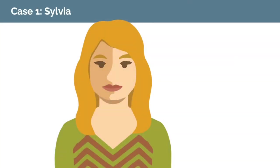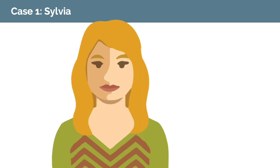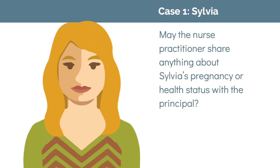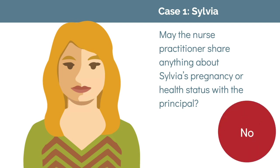Sylvia is 16. She gets a pregnancy test at her school-based health clinic, whose records are subject to HIPAA and the California Medical Information Act. The test comes back positive. Sylvia is distracted the rest of the day, and the principal notices this and asks the nurse practitioner what is happening with Sylvia. May the nurse practitioner share anything about Sylvia's pregnancy or health status with the principal? No. Because the information is protected health information, it cannot be shared with the principal without a written authorization. Because this information is about pregnancy-related care — services Sylvia consented to or could have consented to receive — Sylvia must sign any authorization to release information.